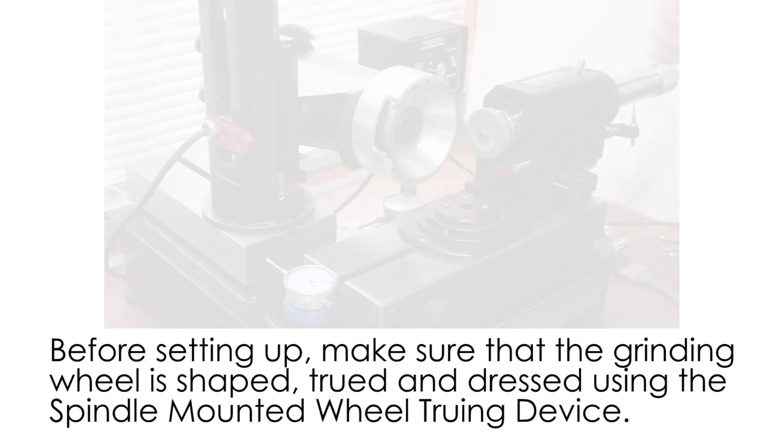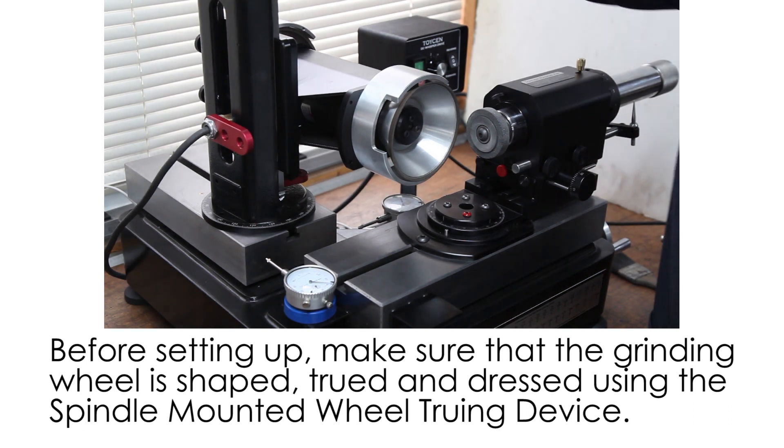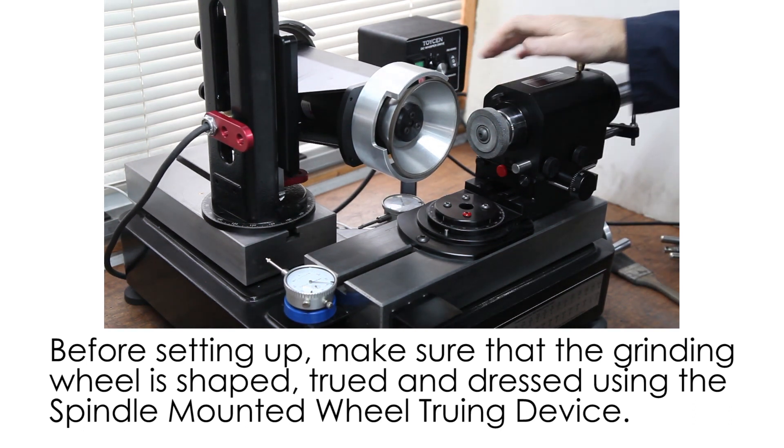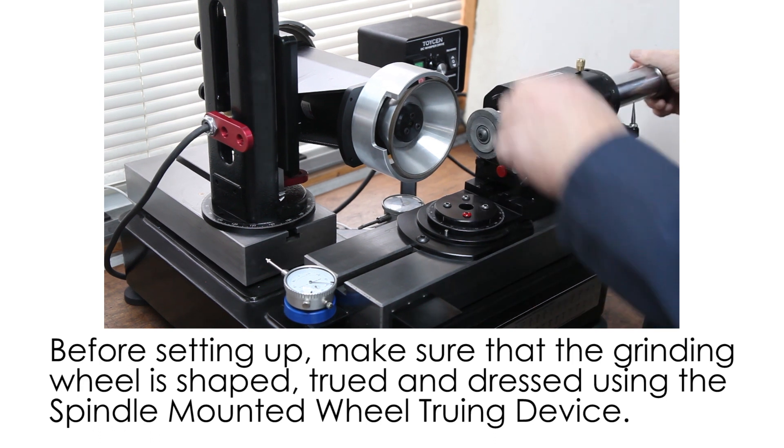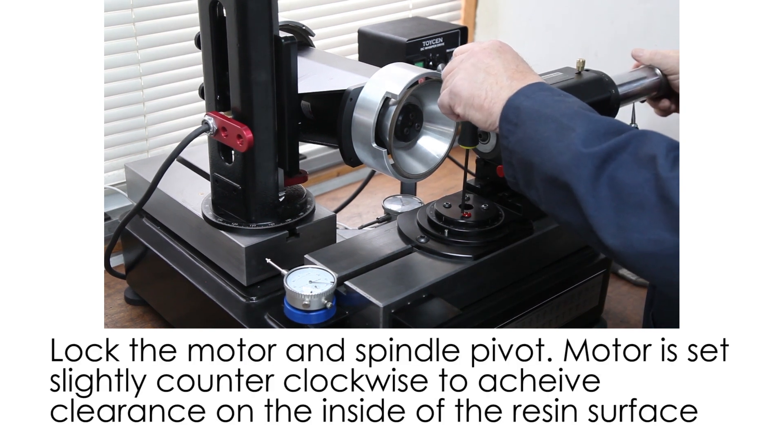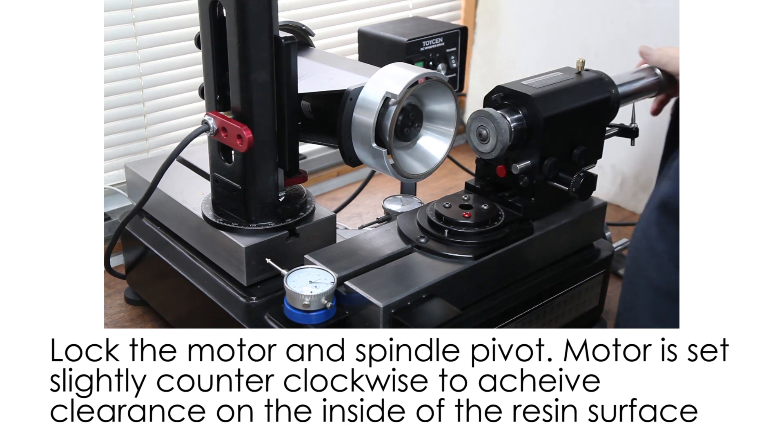Anyway, let's true up the wheel. To true up the wheel you want a little bit of scuffing going on. You don't necessarily want the stone on center. You want to lock the rotate of the air spindle so the spindle doesn't move during the truing process.